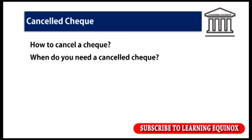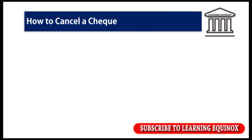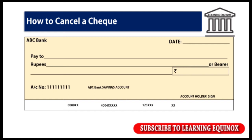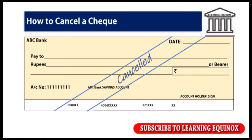Let's look at how to cancel a check. In our earlier video, we have already talked about cancellation of a check where we mentioned that simple drawing of two lines across the check by placing the word 'cancelled' in between them is the right way to cancel a check, as you can see on the screen. Besides this, there are a few things that you must keep in mind while cancelling a check. Firstly, do not sign a cancelled check.